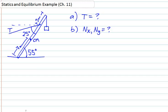Okay, welcome back everyone. This is number 18 in chapter 11, an example problem on statics and equilibrium. We're given a crane which itself has a weight of 15,000 newtons, and it's carrying a box that has a weight of 11,000 newtons.